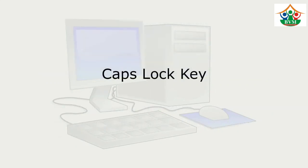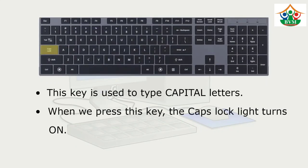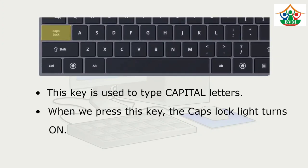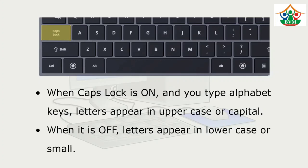Now, the caps lock key. This key is used to type capital letters. When we press this key, the caps lock light turns on. When caps lock is on and you type alphabet keys, letters appear in uppercase or capital. When it is off, letters appear in lowercase or small.